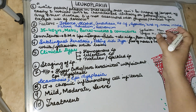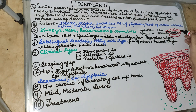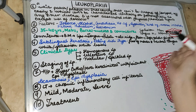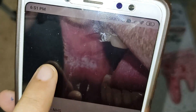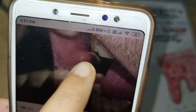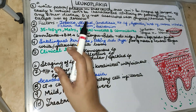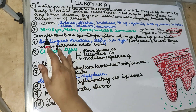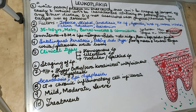Commissure leukoplakia extends from the commissure going inside the buccal mucosa making a triangle, over a distance of about 2 centimeters. On the buccal sides it involves a central zone of buccal mucosa in the molar region, going along the occlusal plane. The frequency in descending order of involvement: commissure area, buccal mucosa, lips, tongue, palate, alveolar ridges, floor of the mouth, soft palate, and then gingiva.